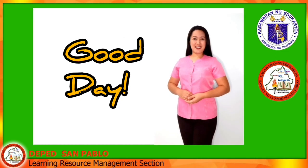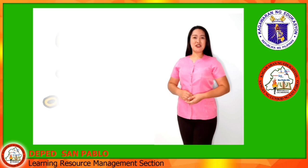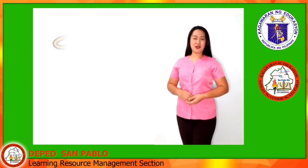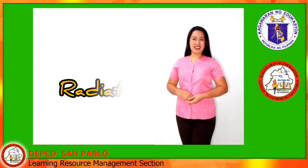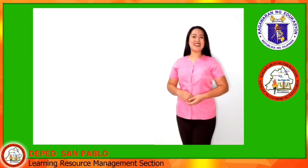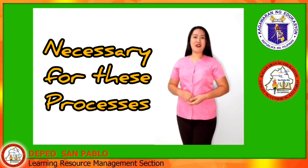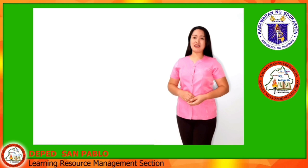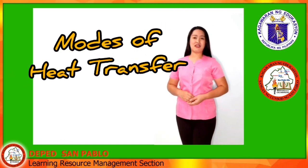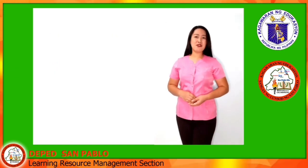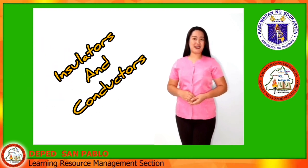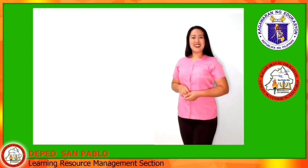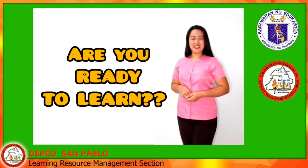Hi! Good day! In our previous lesson, you learned about heat as a form of energy that can be transferred through conduction, convection, and radiation. You identified the conditions necessary for these processes to occur and performed activities to investigate the different modes of heat transfer. You also learned to distinguish between insulators and conductors of heat and were able to identify the uses of each. Are you ready to learn? Let's go!